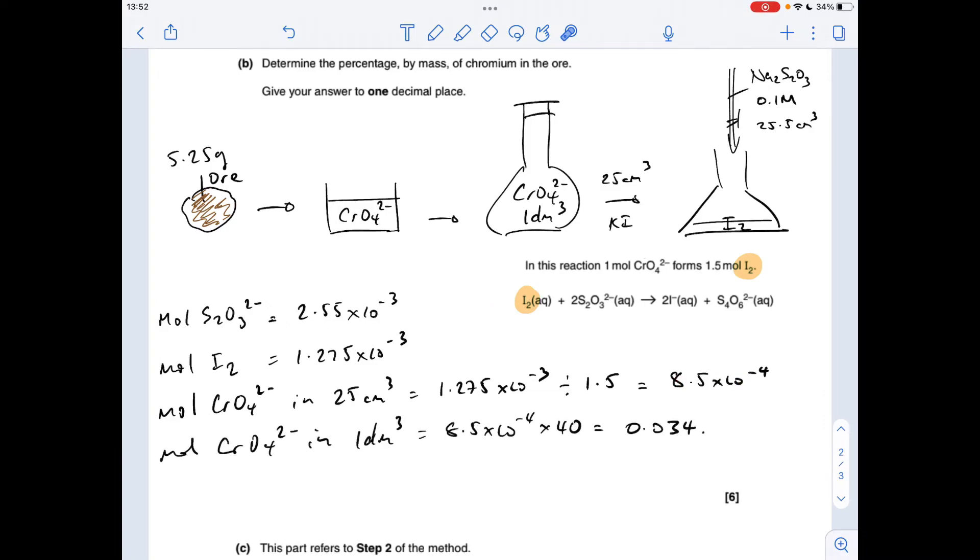Okay, so this is where I'm going to mention that thing I said at the very start of the video. So we now know how many moles of this are in this one decimeter cubed. So where did they come from? They came from that, which came from the reaction of the chromium chemical that's in the ore, and we established that all the moles of chromium in the ore became these moles here. So therefore, these are the moles of chromium that are in that 5.25 gram sample of ore.